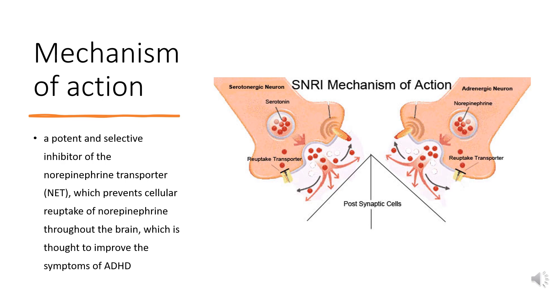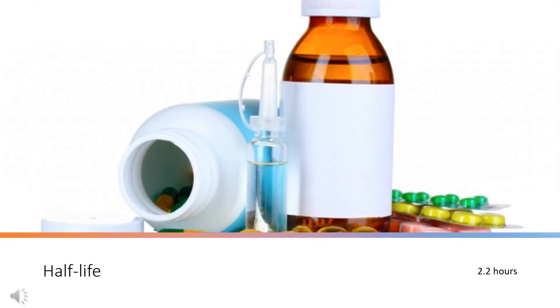Imaging of human brains after administration of methylphenidate shows changes to blood flow in various regions of the brain, including the striatum, supplementary motor area, and posterior parietal cortex.